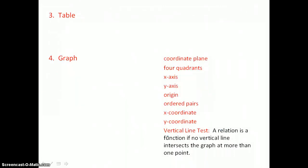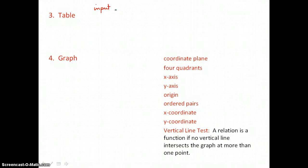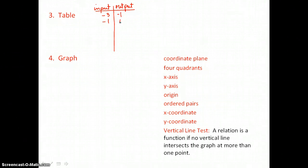A couple other ways we can represent a relation are in table form or as a graph. Let's list an input-output table, which can be vertical or horizontal — this one happens to be vertical. Our first pairing is (-3, -1), then (-1, 1), (1, 1), (1, 3), and (2, -1).